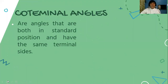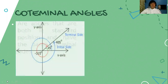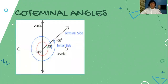Coterminal angles are angles that are both in standard position and have the same terminal side. Always remember that when we pertain to angles in standard position, it must be on a unit circle and it must be plotted on the Cartesian plane. The initial side must be the positive x-axis. Notice that the blue rotation is 405 degrees, which exceeds the entire complete revolution of 360 degrees.